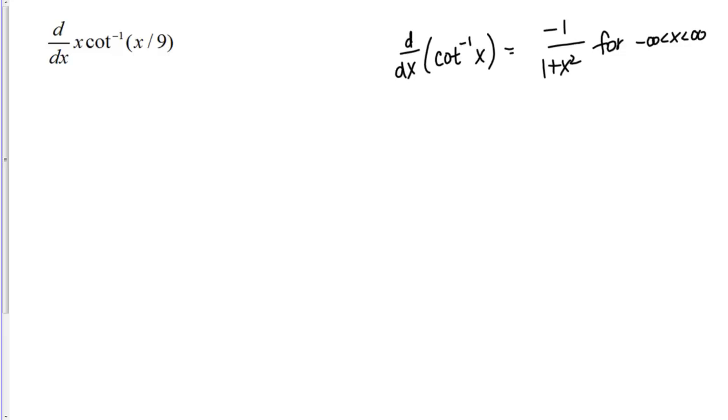Let's use this formula to take the derivative of this equation. Here we actually have the product of X and this inverse cotangent. We're going to have to use the product rule to take the derivative. That's going to equal first times the derivative of the second piece plus the second piece times the derivative of the first.